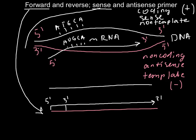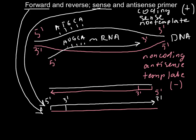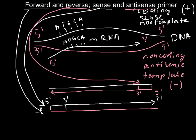When we design the second primer, it also grows from the 5' to 3' direction, but it grows in the opposite direction to the sense or forward primer. So we call this primer the reverse and antisense primer, because the new strand of DNA that we produce would be the same as the antisense strand of DNA. So this is the reverse and antisense primer.